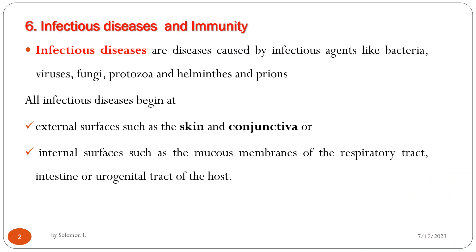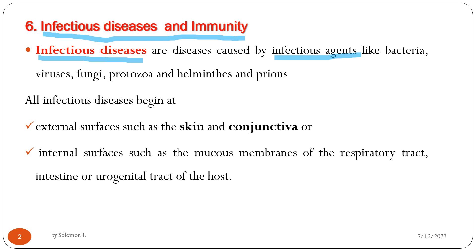This unit 6 or chapter 6 is all about infectious disease and immunity. So let us first define what infectious diseases are. Infectious diseases are diseases caused by infectious agents like bacteria, virus, fungi, protozoa, helminths, and prions.